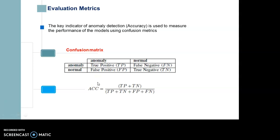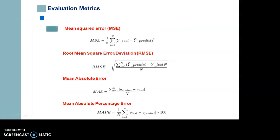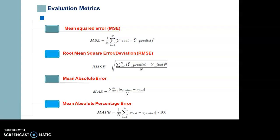To assess the effectiveness of the proposed model, the key indicator of anomaly detection accuracy is used to optimize model performance using a confusion matrix. The confusion matrix consists of four indicators: true positive, false positive, false negative, and true negative. For the regression model, we used mean square error as a loss function and root mean square error as a standard estimator to evaluate prediction errors. Additional performance metrics are mean absolute error and mean absolute percentage error.